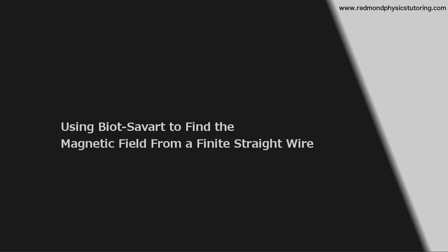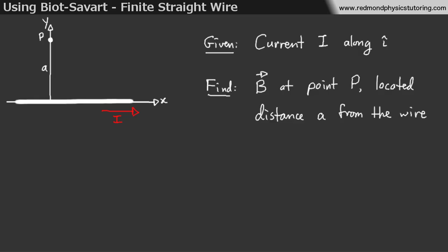Hi, this is Scott from RedmondPhysicsTutoring.com, and today I'm going to investigate using Biot-Savart to find the magnetic field from a finite straight wire. It seems like a fairly straightforward problem. We have a current I going through a wire of a certain length, and we're told to find the magnetic field B at a certain point P, located a distance A from the wire. There's a bit of an art to setting it up, though, and solving the integral, so I'm going to go through that right now.